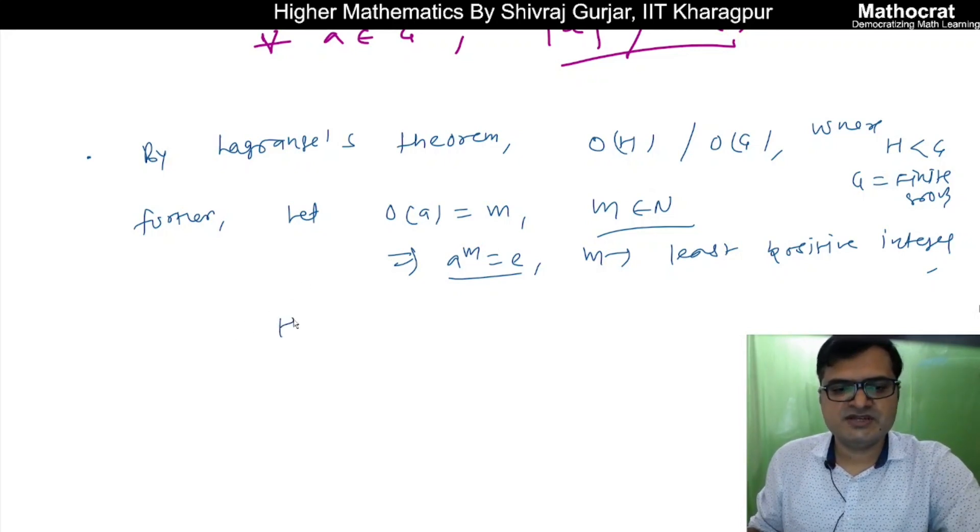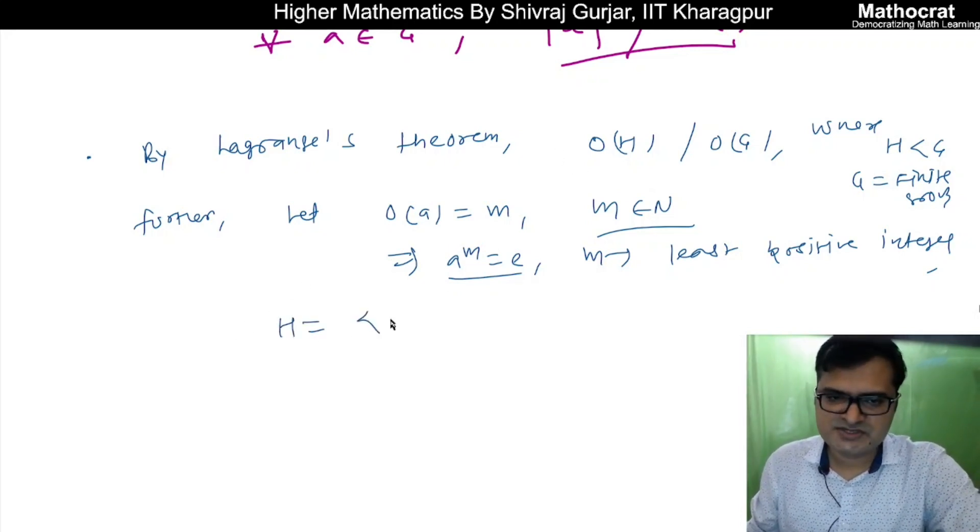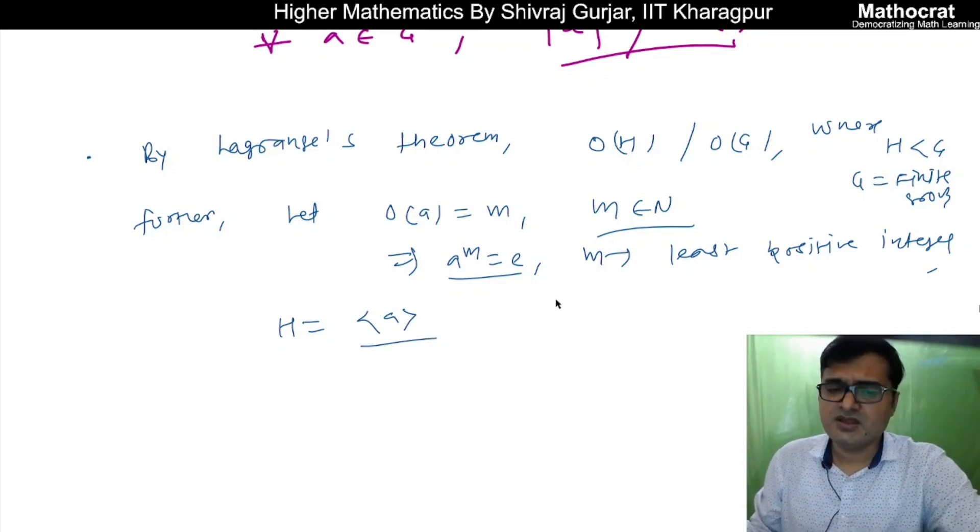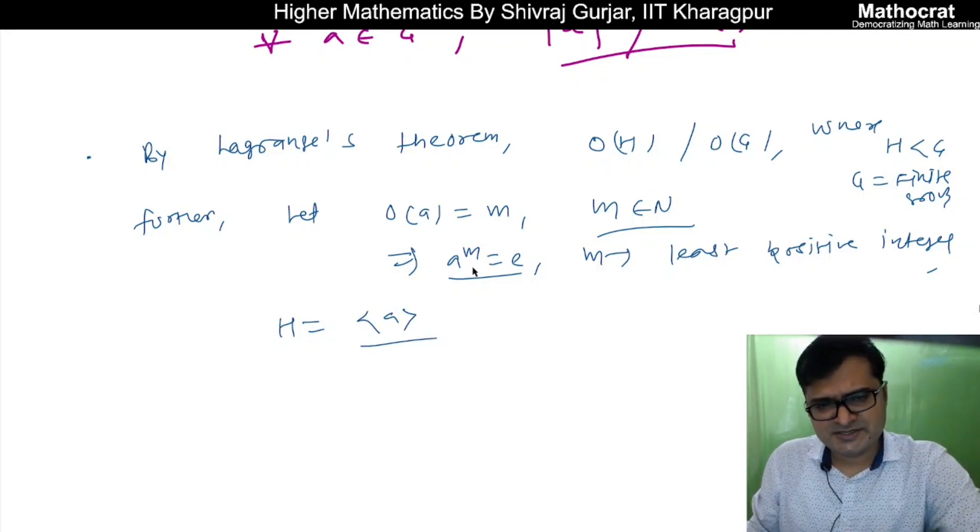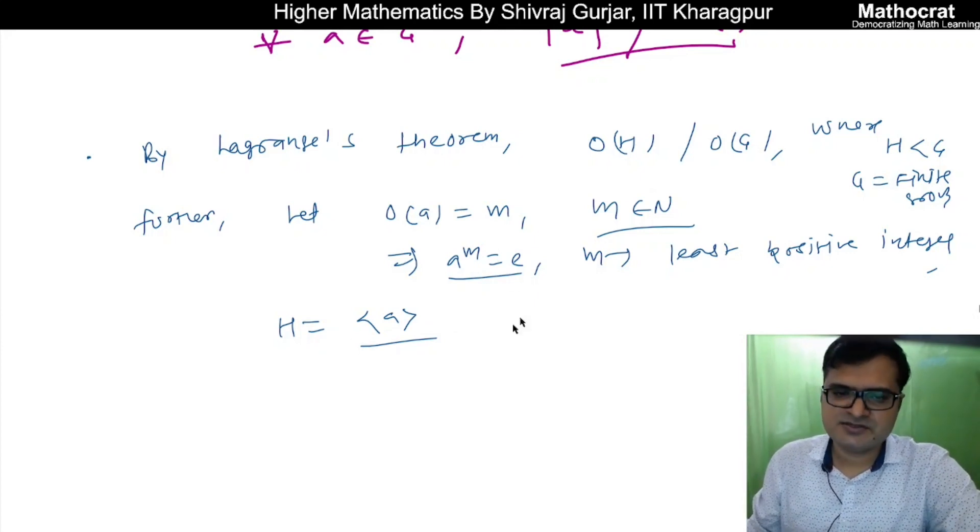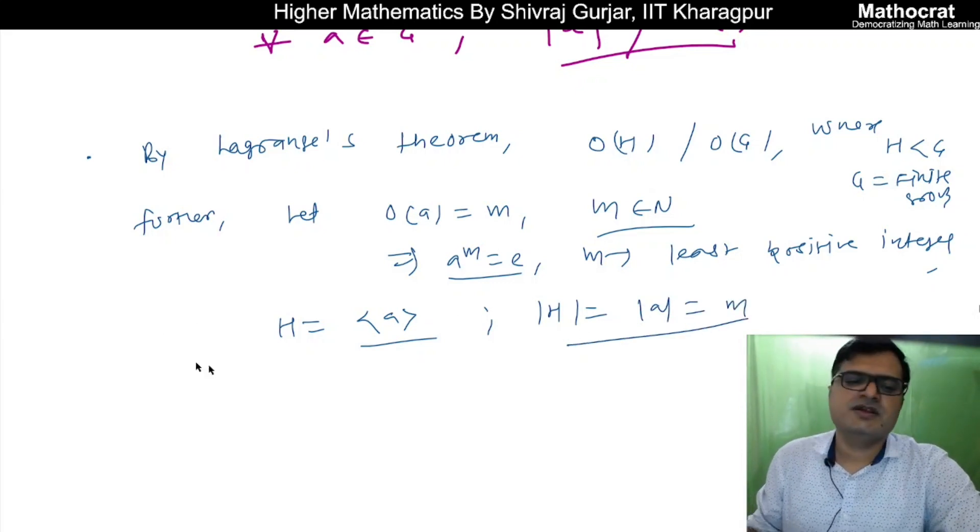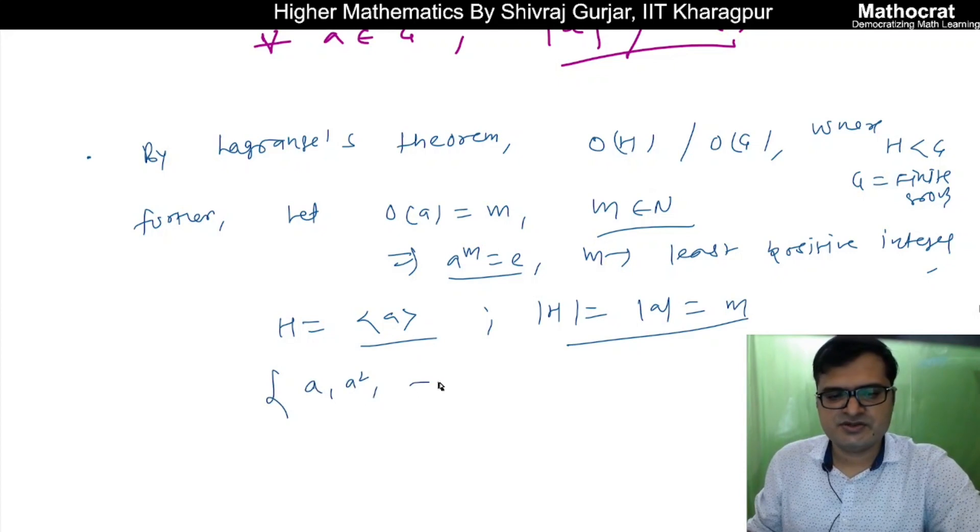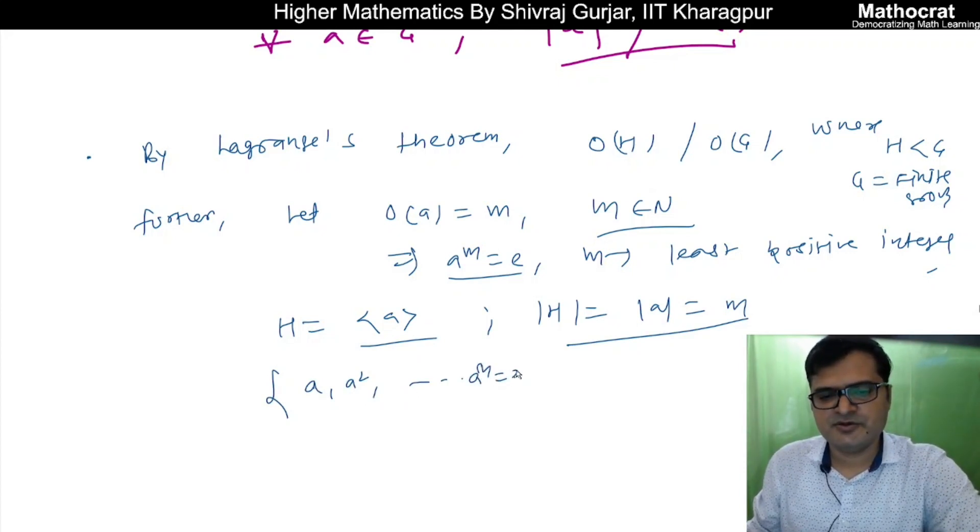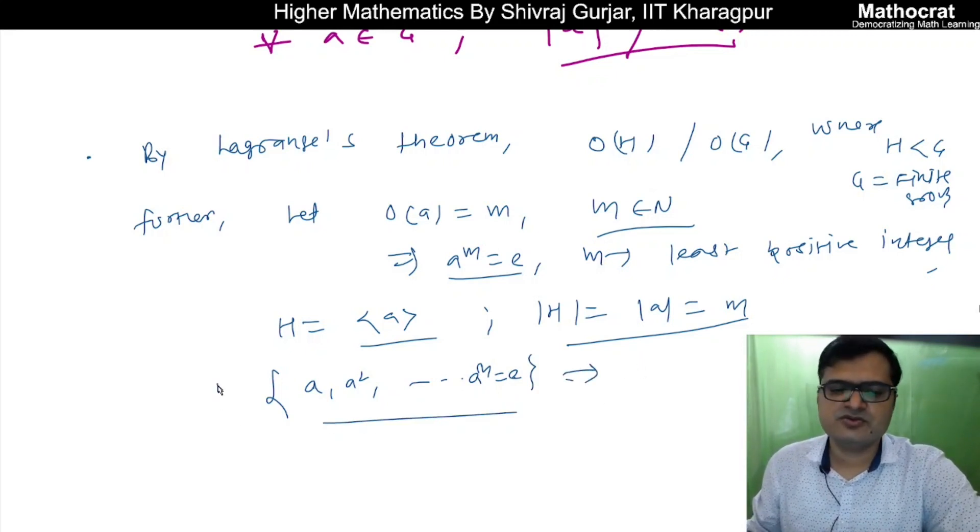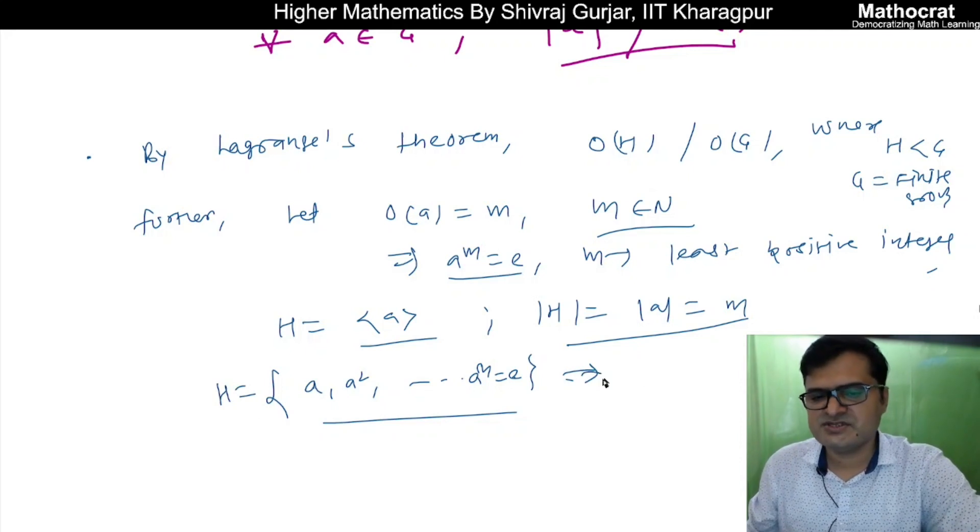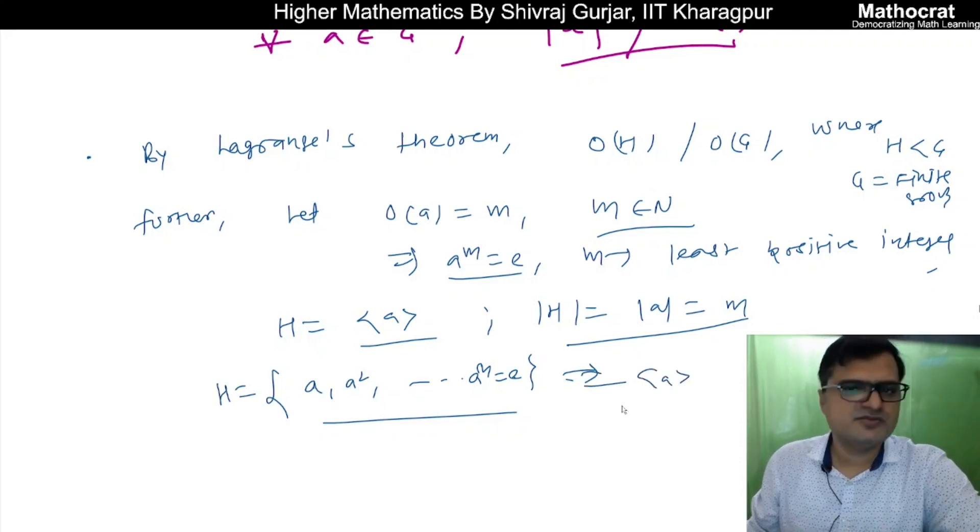We can assume that H, we can take any subgroup which is generated by a. This will be a cyclic subgroup. The order of H will be nothing but order of a only, which is M. If we take the set {a, a², ..., a^m} where a^m = e, this is subgroup of G.